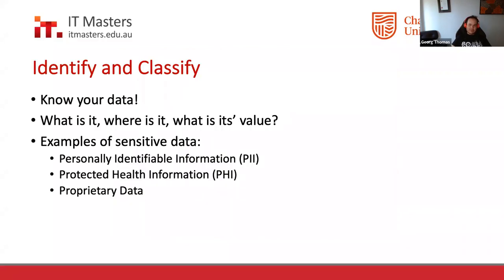Tonight we'll talk about identification and classification as a key element. Knowing your data is really important: what is it, where is it, what is its value? Examples of sensitive data include personally identifiable information (PII), protected health information (PHI), and proprietary data such as intellectual property and trade secrets. In my day-to-day job I work in the data protection and privacy space, so there's a big focus on PII, PHI, and other confidential data.